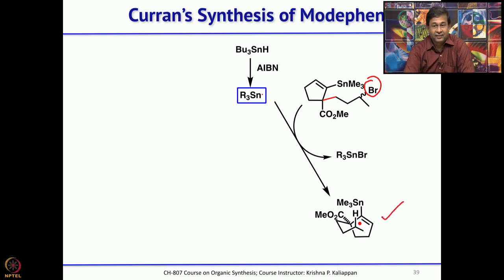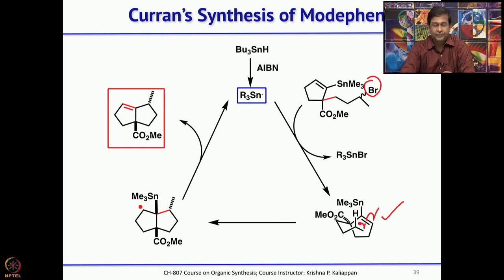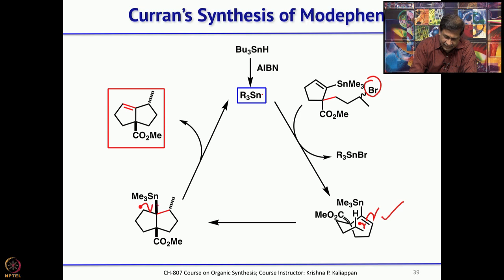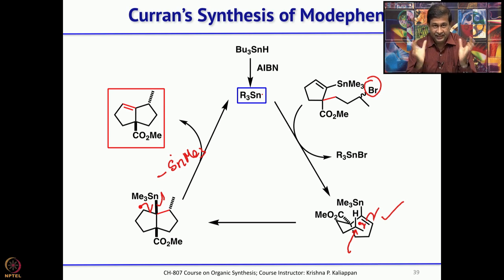The stereochemical outcome of the 5-exo radical cyclization can be analyzed using a chair-like conformation. Drawing such a conformation, the first step is radical addition to the double bond (5-exo-trig), giving the corresponding radical, which then undergoes 5-exo radical cyclization. The resulting radical eliminates the tributyltin radical. The methyl group adopts an equatorial position in the chair-like transition state, which establishes the stereochemistry of the methyl group in the product.